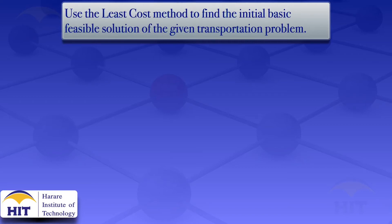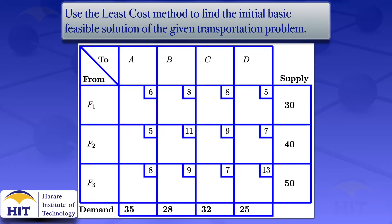In this tutorial I'm going to use the least cost method to find the initial basic feasible solution of the transportation problem — that is three sources F1, F2, and F3, and four destinations A, B, C, and D.